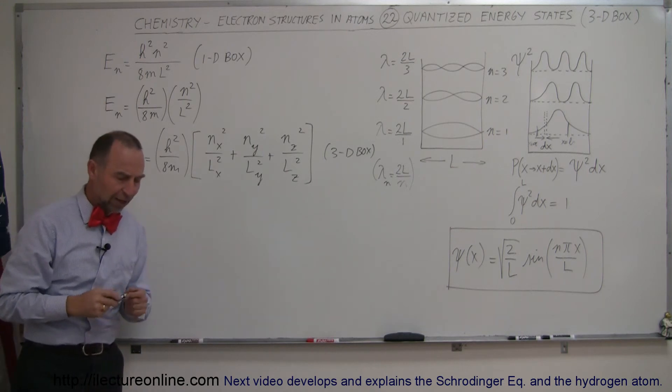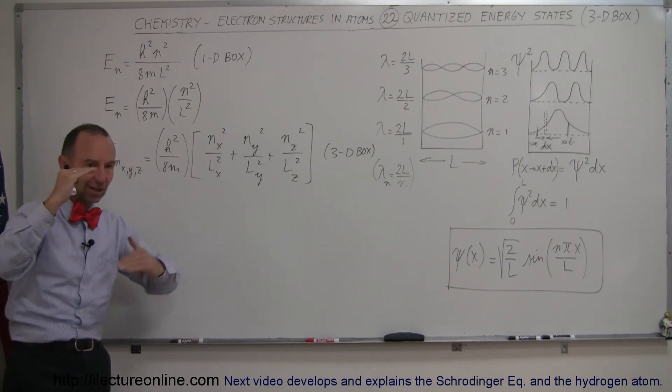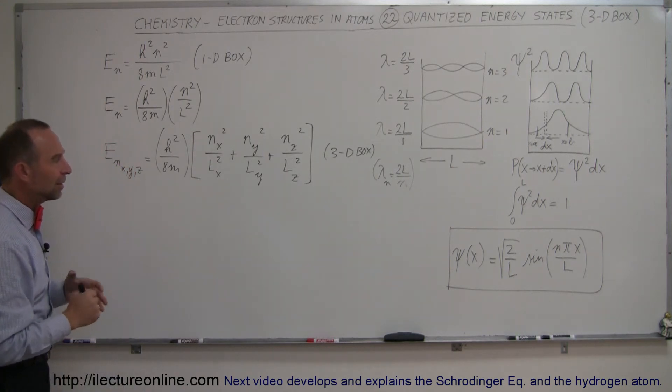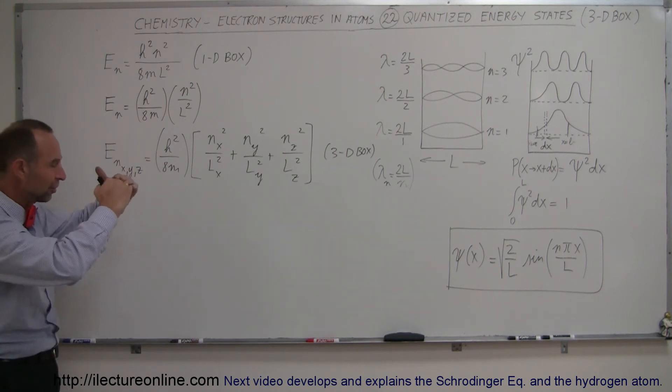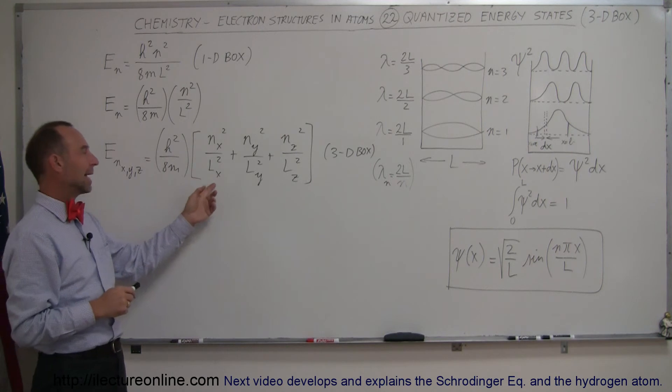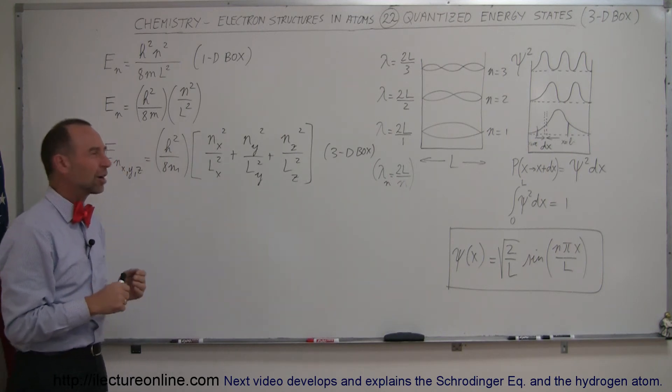Now, of course, there's not a lot of things in nature that are box-like. So an electron, I mean, an atom is not exactly a box. An atom is a spherical construct, right? It's a spherical, well, more or less a spherical shaped object. And so, instead of talking about the X, Y, and Z direction, we're going to have to talk about it in terms of the spherical coordinates.